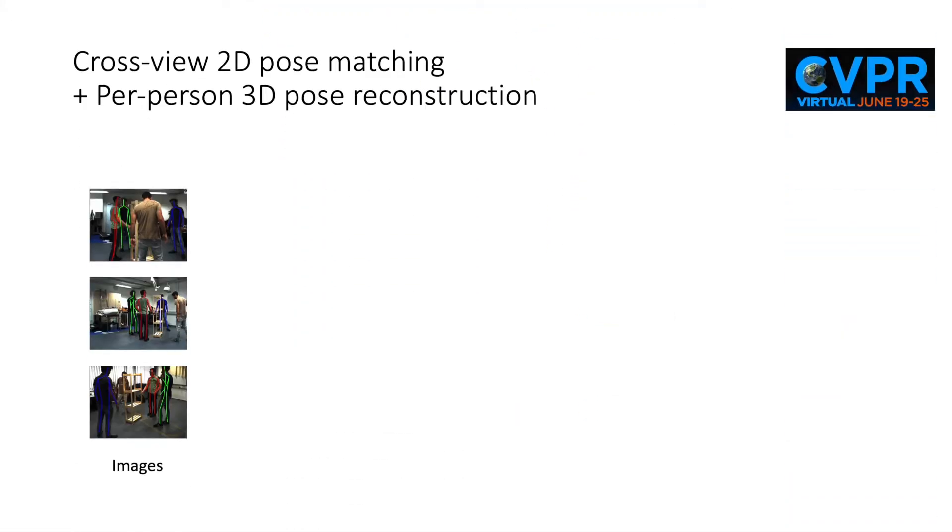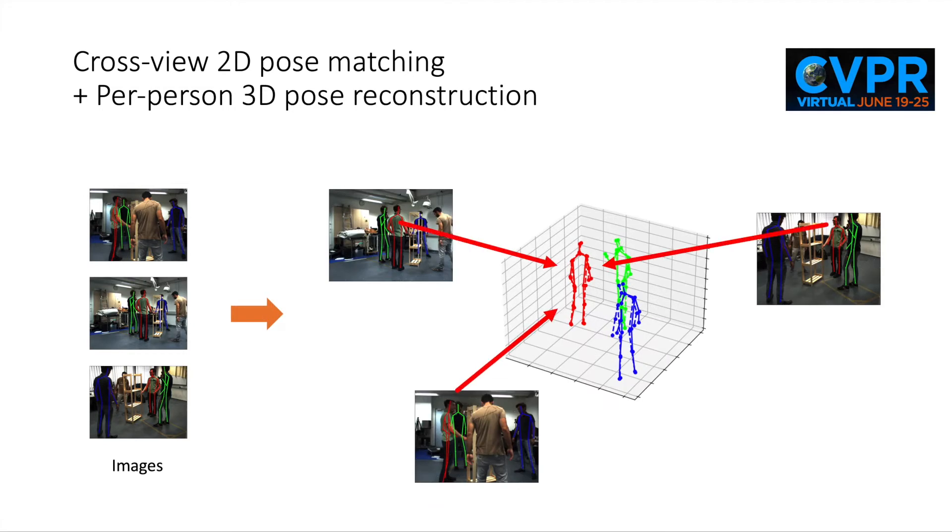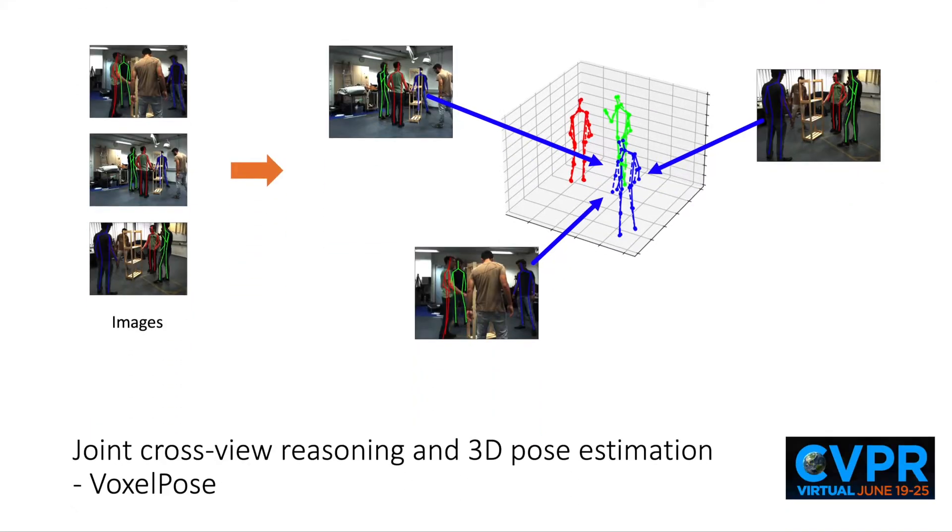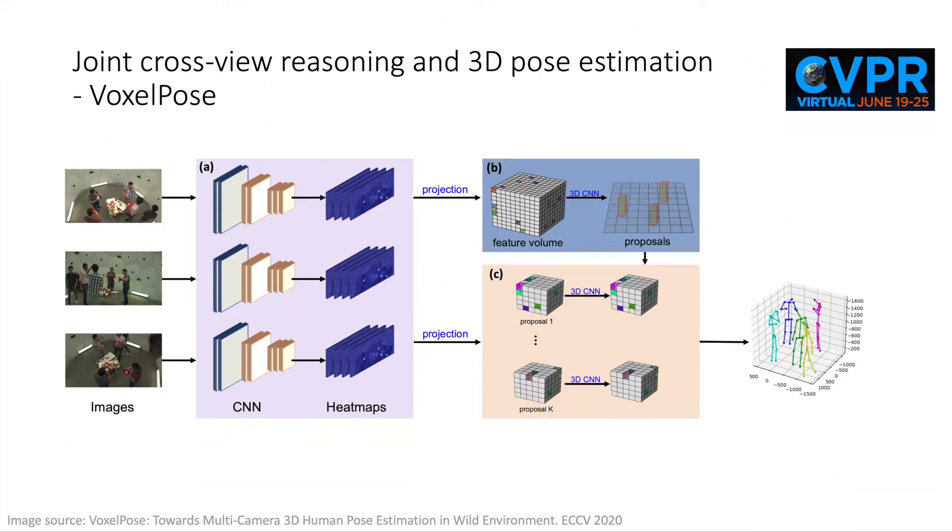Existing approaches for multi-view and multi-person 3D pose estimation can be divided into two categories. Most approaches explicitly establish cross-view correspondences to group 2D pose detections from multiple camera views and solve for the 3D pose estimation for each person subsequently. Such two-stage pipeline heavily relies on the accuracy of the cross-view matching results.